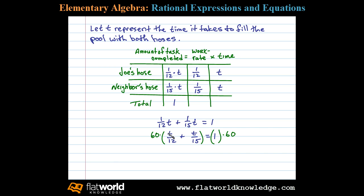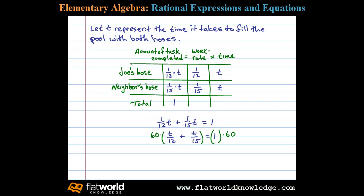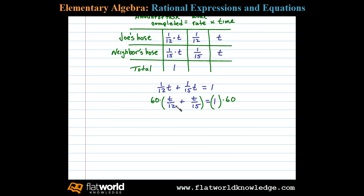On the left side here we have to take care to distribute. 60 times T over 12 is 5T plus 60 times T over 15 is 4T and 1 times 60 is 60. Same side like terms we have 9T equals 60.